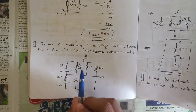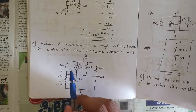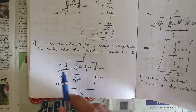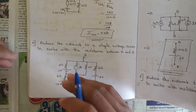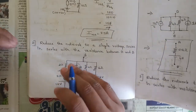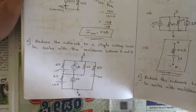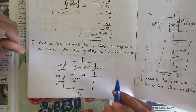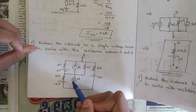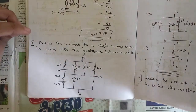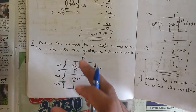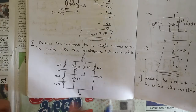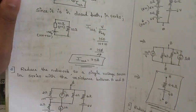The rules are: whenever we have a voltage source in series with a resistance, we can convert it into a current source in parallel with the resistance. Whenever we have a current source in parallel with a resistance, we can convert it into a voltage source in series with the resistance. Two current sources in parallel can be added or subtracted depending on their direction — same direction means add, opposite direction means subtract.